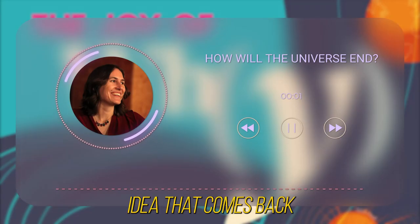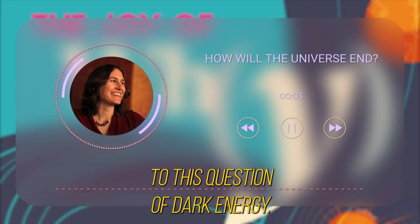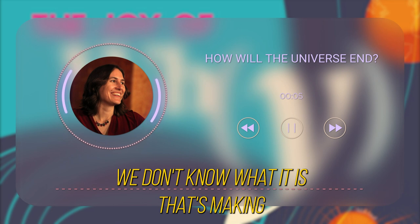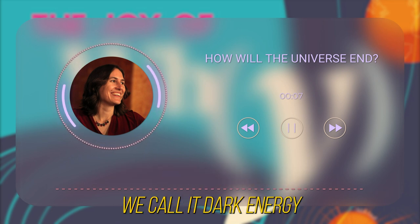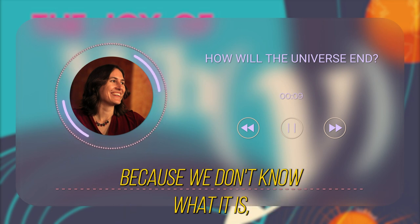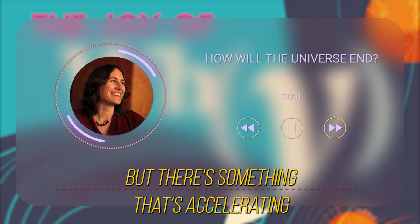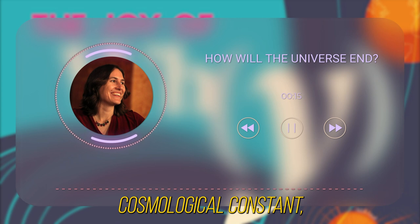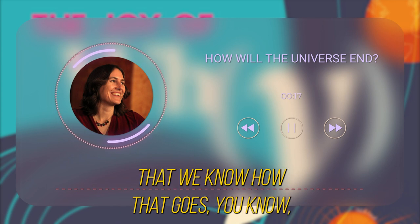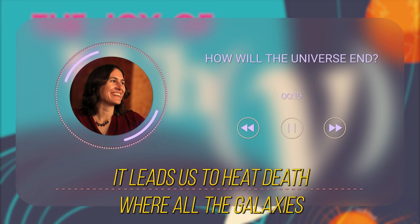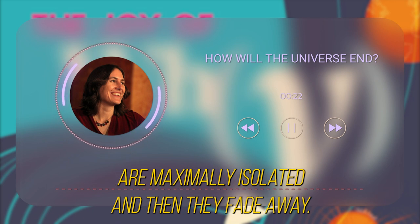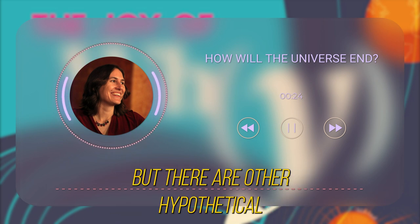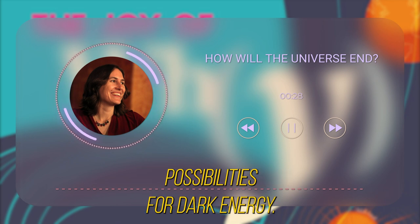The big rip is an idea that comes back to this question of dark energy. We don't know what it is that's making the universe expand faster. If it's just a cosmological constant, if it's just a property of the cosmos, then it leads us to heat death where all the galaxies are maximally isolated and then they fade away. But there are other hypothetical possibilities for dark energy.